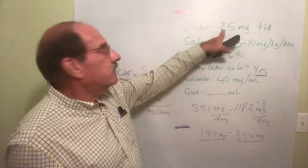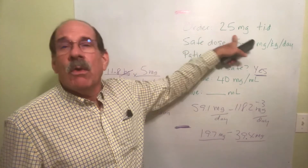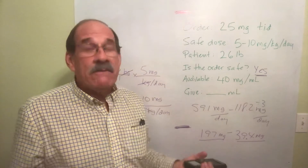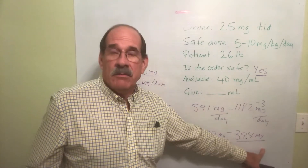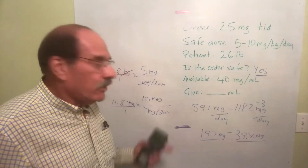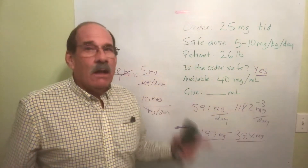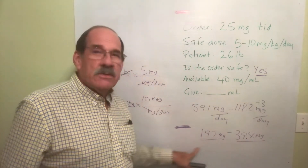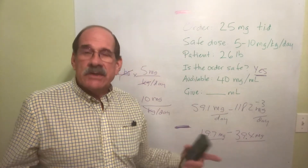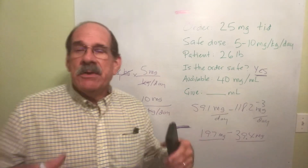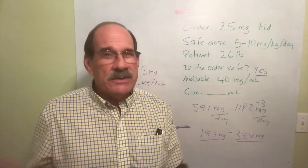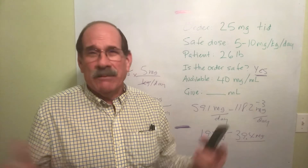What if the order had been 45 milligrams? It's over the upper number — can't do it, you don't give it. What if the order was 15 milligrams? It's below the lower number — you don't give it either. If it's in the range, it's safe. If it's not, you don't do it, and you call the licensed prescriber to ask what's going on and what to do.